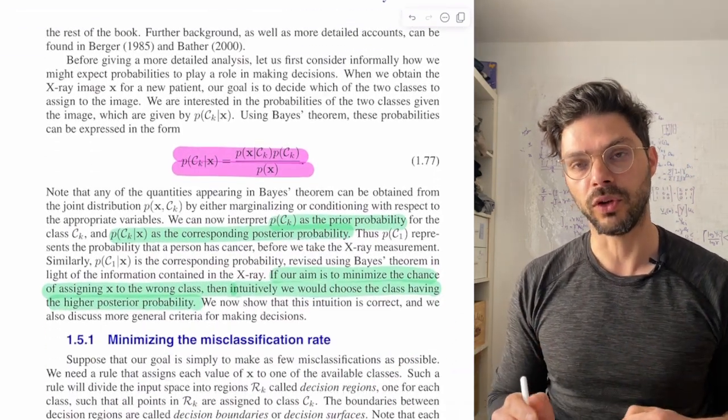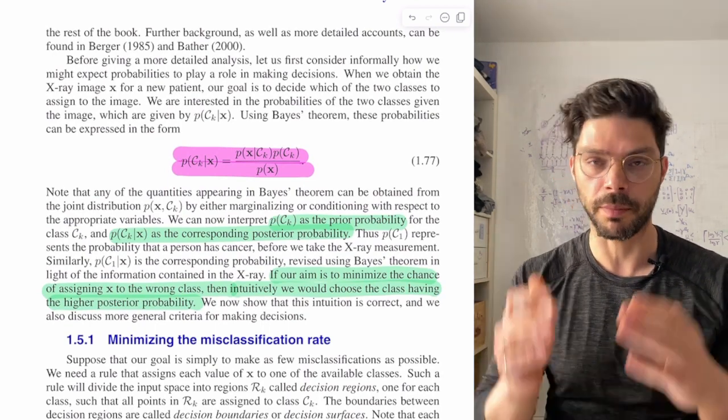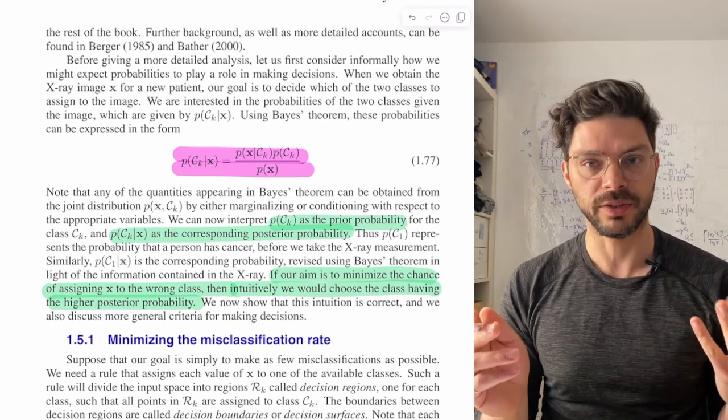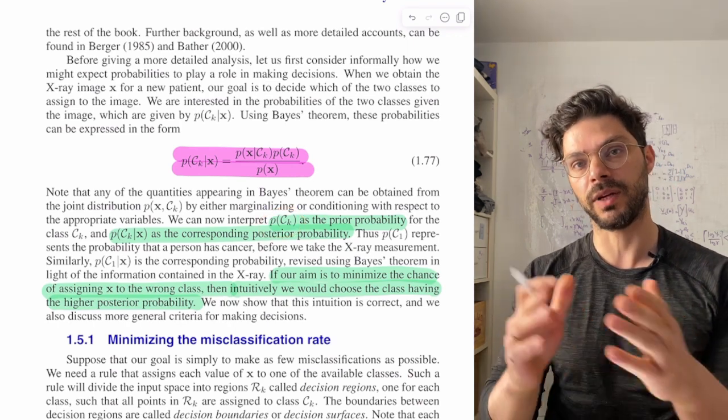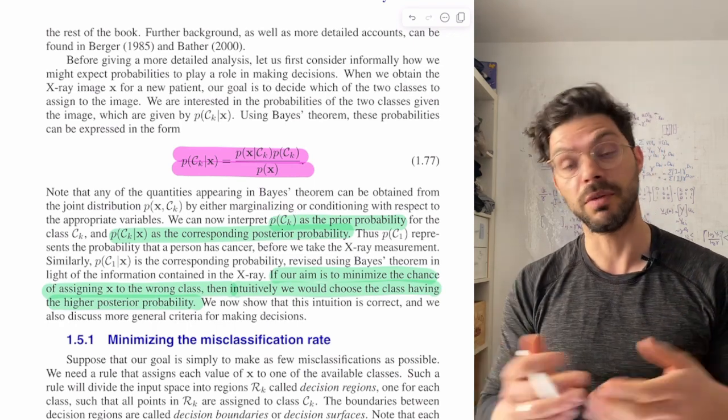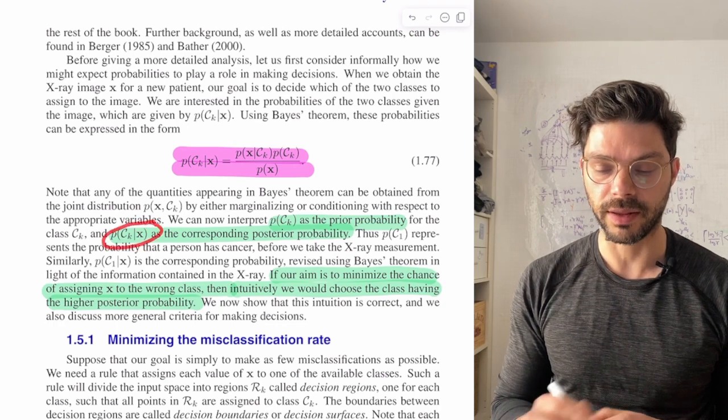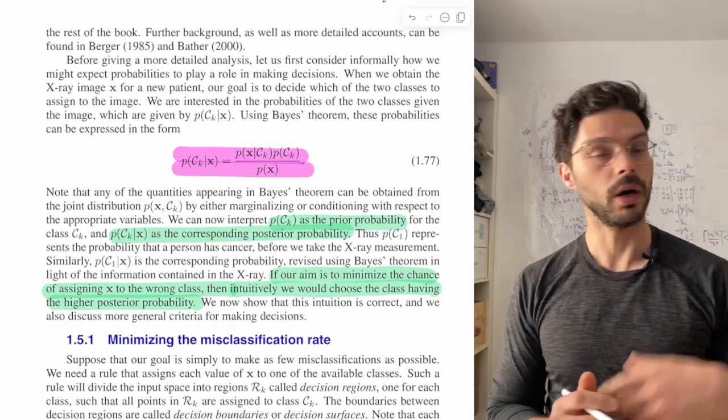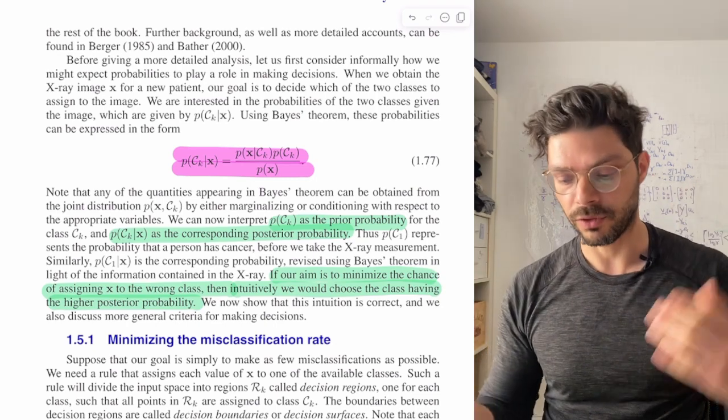The key tool that we're going to use for a lot of this is going to be Bayes' rule, which is going to give us many of the probabilities that we need. So from that joint distribution that we have, we can compute all the probabilities that we're interested in. In particular, we can get the probability of the classes beforehand, before any, for example, the probability of cancer before we even took an image, so the base rate. And then we can look at the posterior probability, which is the probability of cancer once we have that image, or the probability of the stock going up or down once we have the financial data we're interested in.